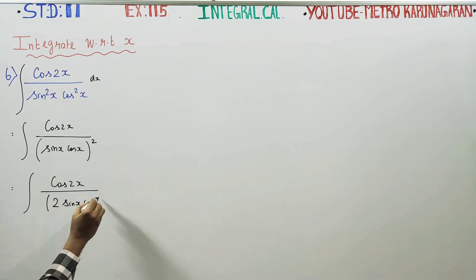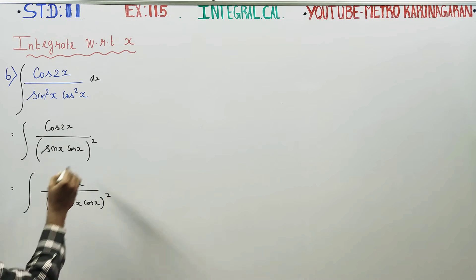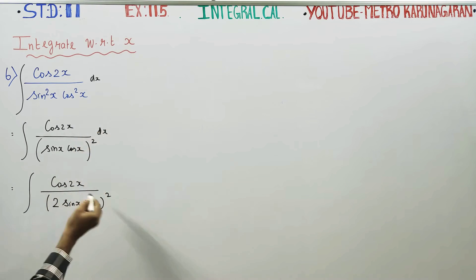What I do is multiply by 4. If you simplify this, you will be getting 4 into sine square x cos square x.